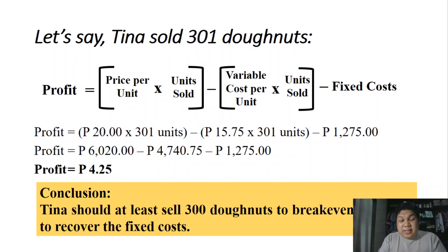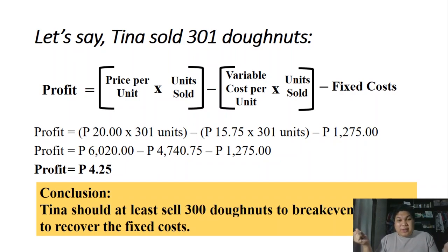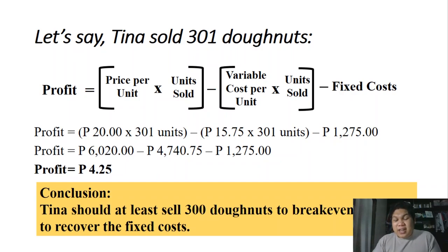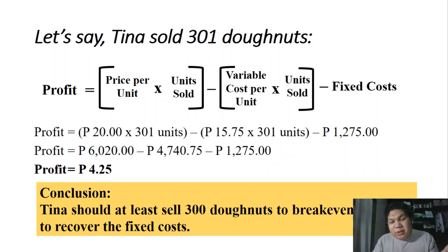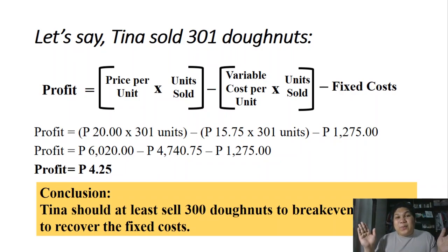In conclusion, Tina should sell at least 300 donuts to break even — earning zero profit and zero loss — meaning she has recovered the fixed costs. To earn profit, she must sell beyond 300 donuts. The important lesson in business is to focus on costs — both variable and fixed. Once you have recovered the fixed cost through the contribution margin, you start earning profit beyond that point. Thank you for watching.